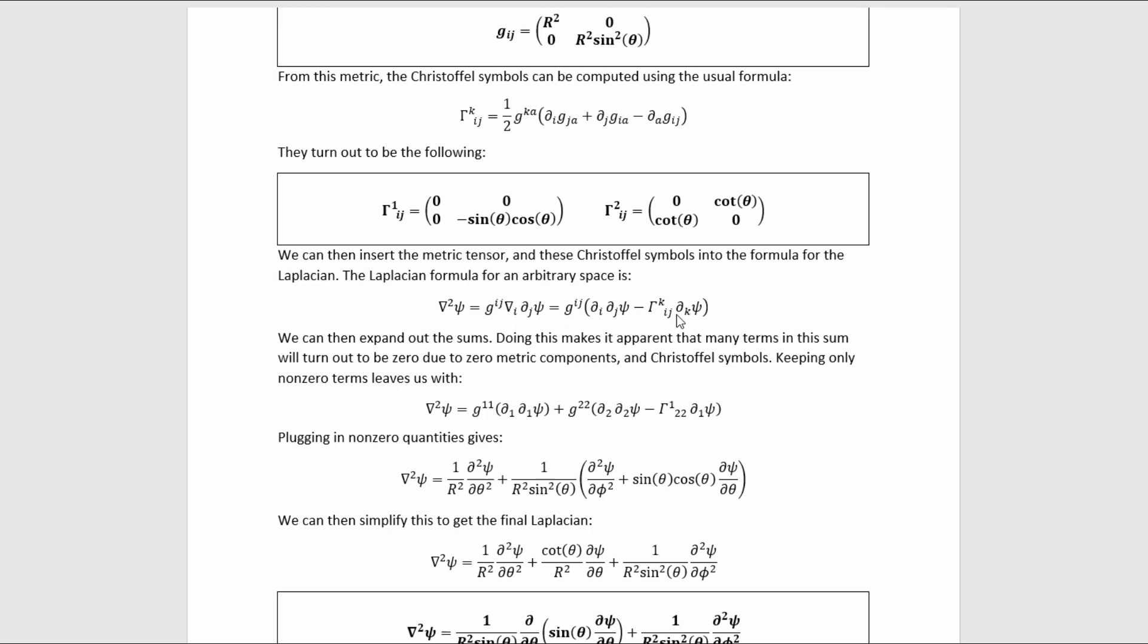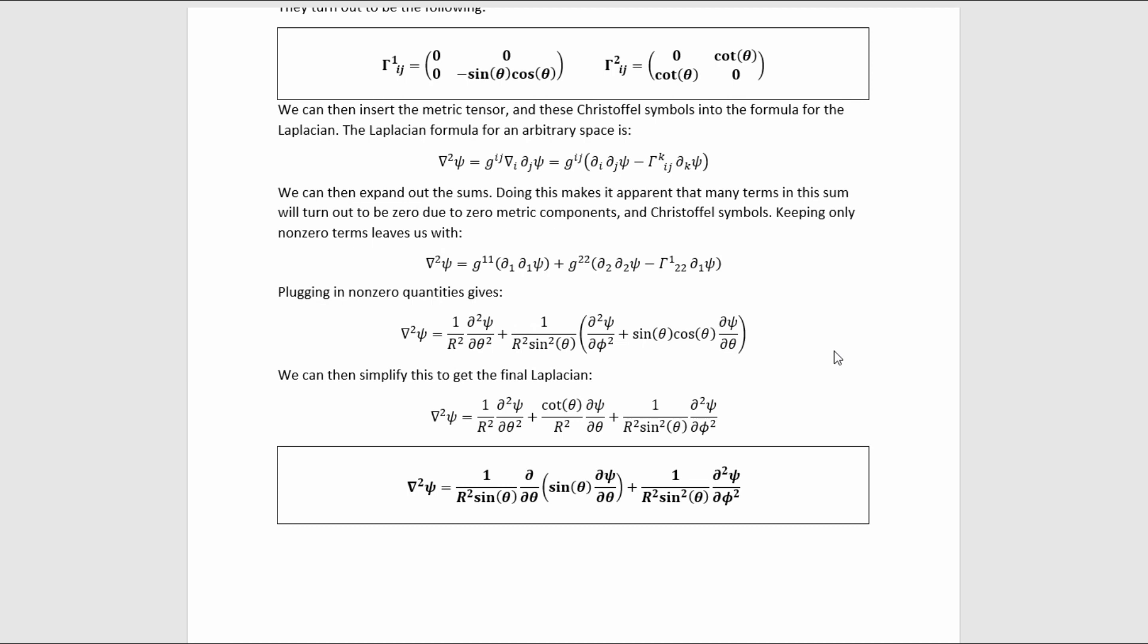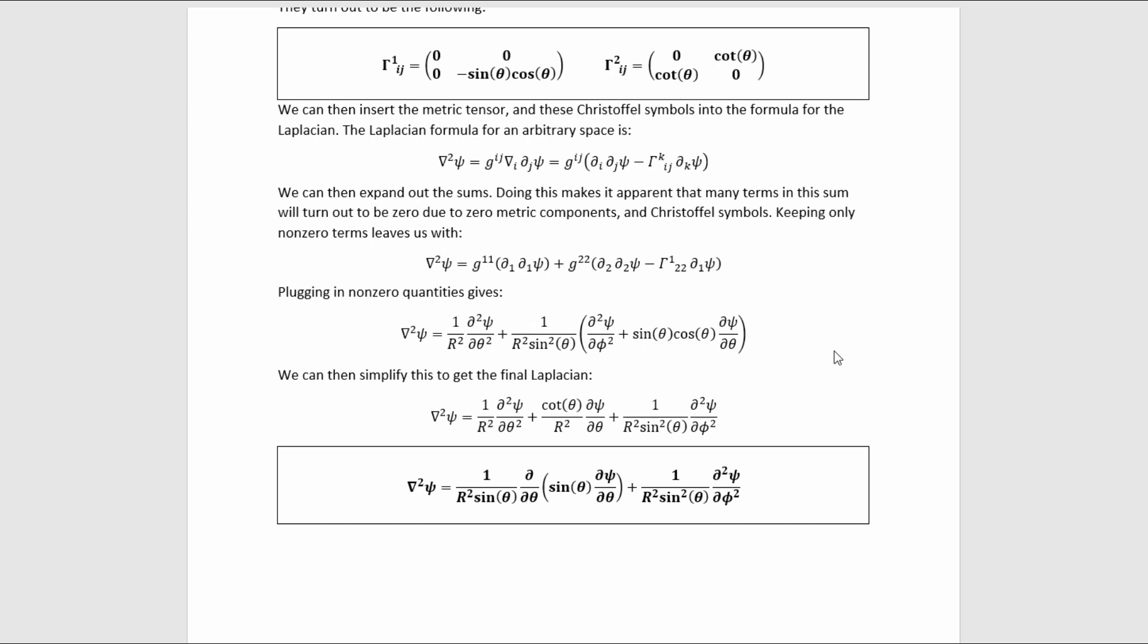We can then insert the metric components and the Christoffel symbols into this formula for the Laplacian written in terms of covariant derivatives. If we ignore all the terms that are zero due to zero Christoffel symbols and zero metric components, just leaving behind the non-zero terms we are left with this. We can then plug in the non-zero metric components and Christoffel symbols to arrive at this value. Simplifying a little bit further gets us to this result. That's the Laplacian on a 2-sphere.